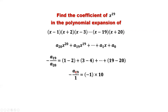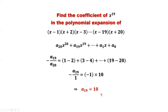So the sum equals negative 1 times 10, giving negative 10. We have negative A19 over A20. Now we replace A20 by 1 — why? Because in the polynomial expansion, A20 is the coefficient of x^20, which comes from multiplying the leading x from each of the 20 factors. Each leading coefficient is 1, so 1 times 1 twenty times gives A20 equals 1. Simplifying: the two negatives cancel, and we get A19 equals 10. This is the answer.